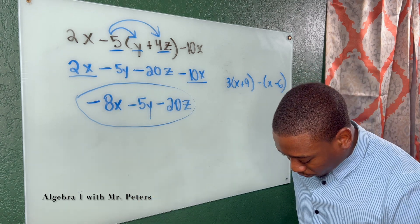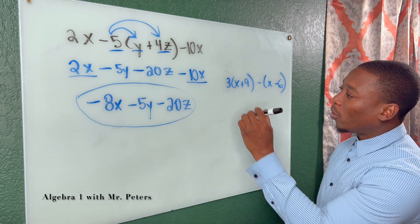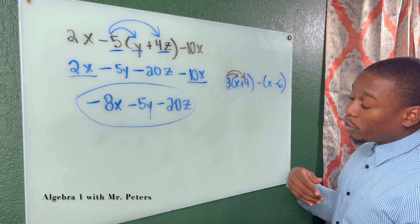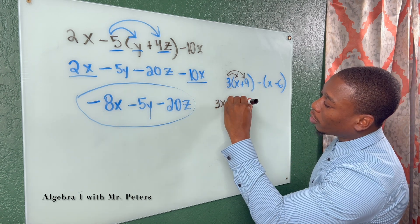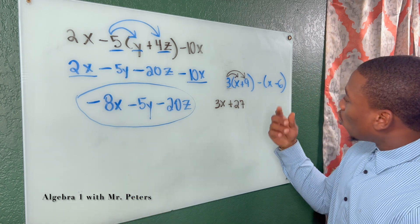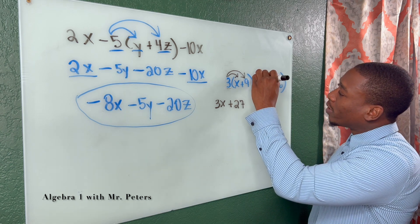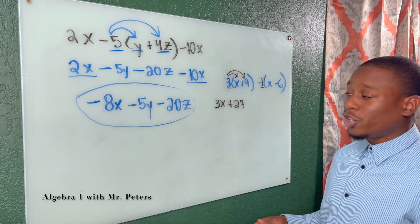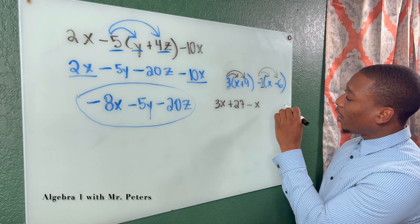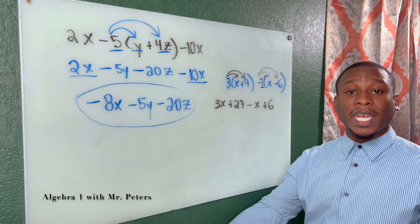In my second example, this is what you'll typically see. We're going to have an outside number and distribute it to whatever's inside the parentheses. When I distribute 3 to x plus 9, I get 3x plus 27. Now, when you see a negative sign outside of parentheses, I like to tell students to put a 1 there. You're basically taking negative 1 and distributing it. So positive x becomes negative x, and negative 6 becomes positive 6 — the signs of everything inside the parentheses change.